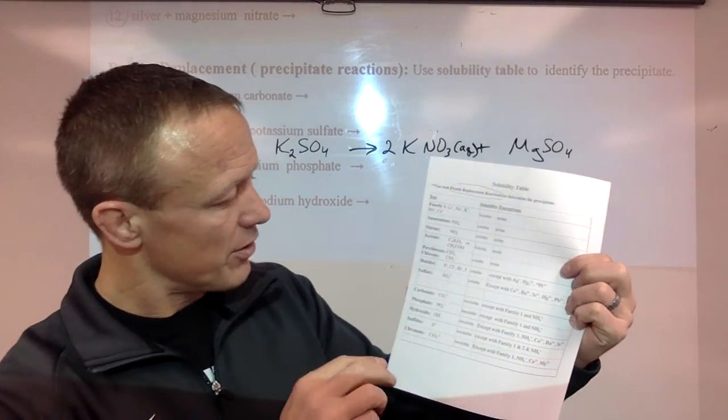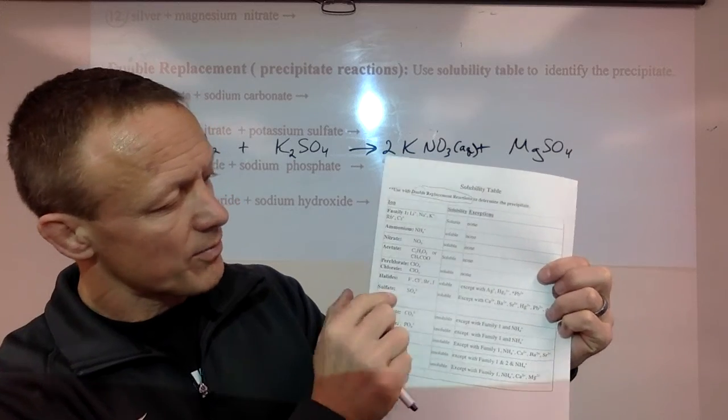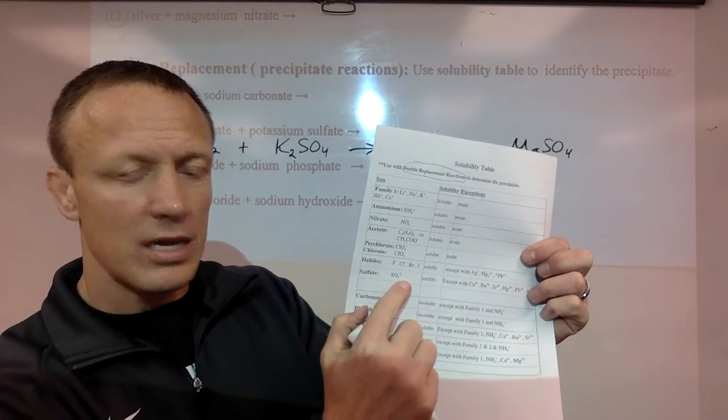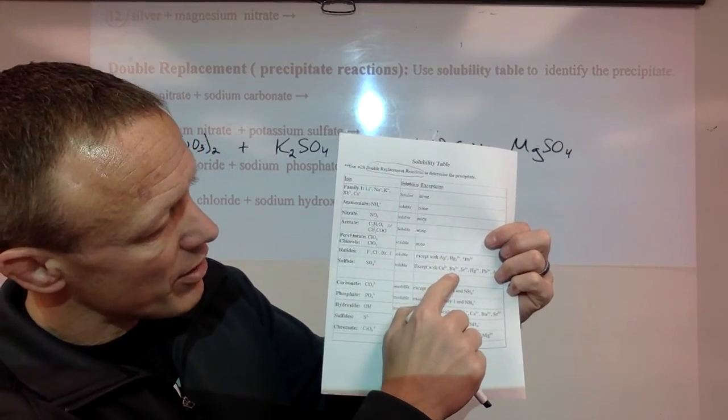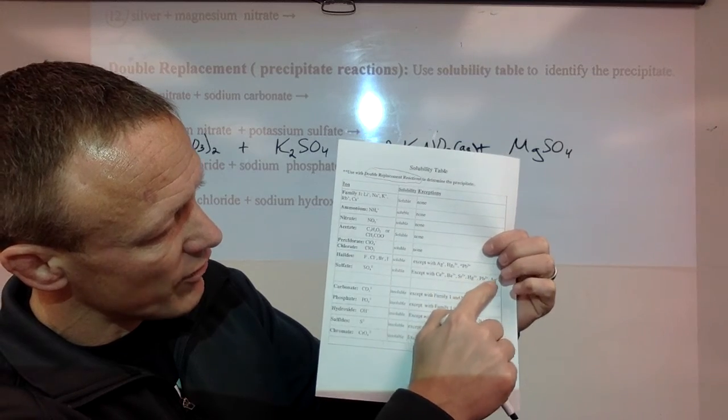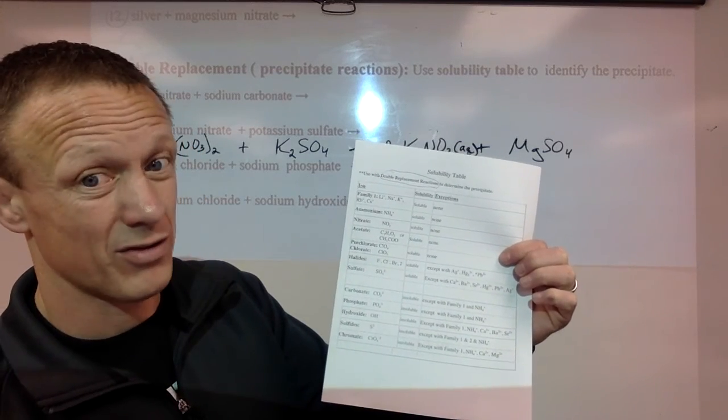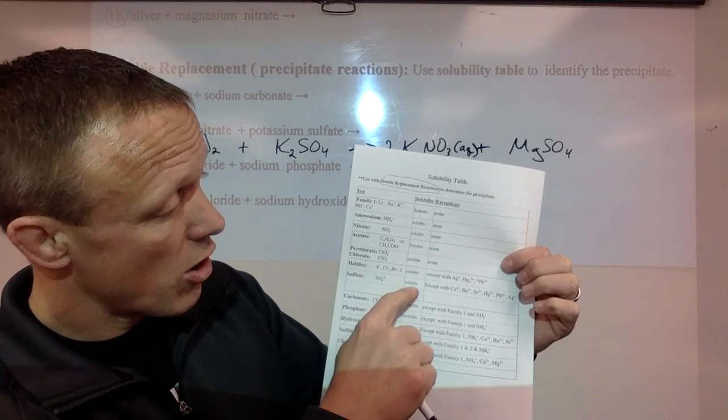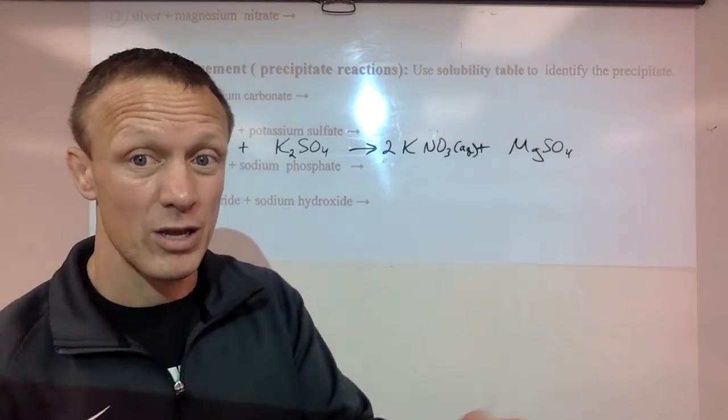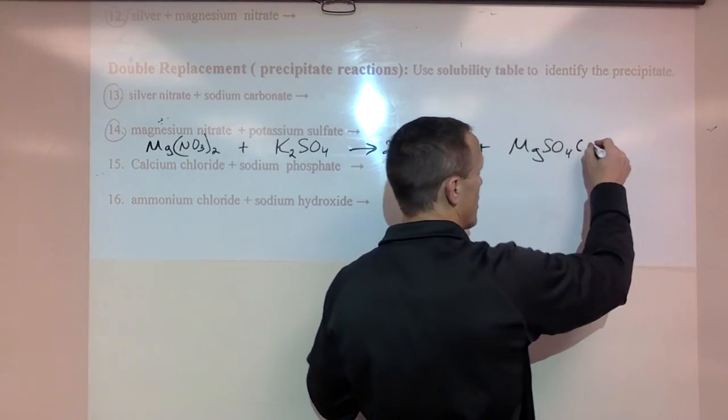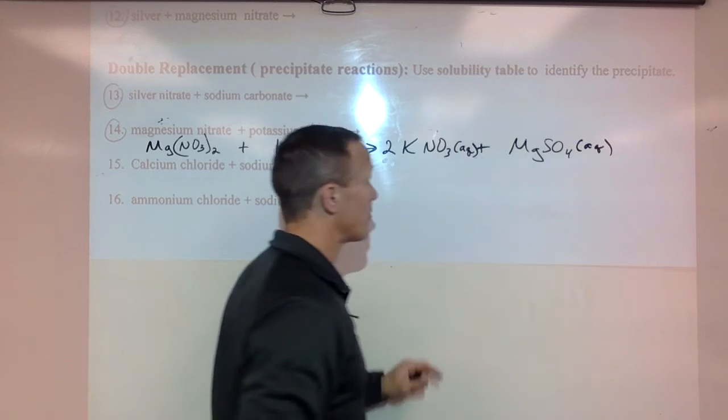Sulfate. Magnesium sulfate. So down here sulfates. Sulfates are soluble. Unless you have calcium sulfate, barium sulfate, sodium sulfate, mercury sulfate, lead sulfate, or silver sulfate. Well we don't have any of those. So sulfates are soluble. Magnesium sulfate is soluble. It will dissolve. So both of those are aqueous.